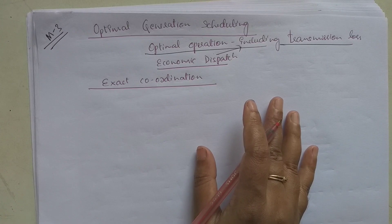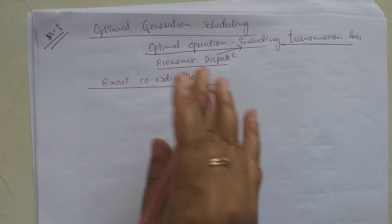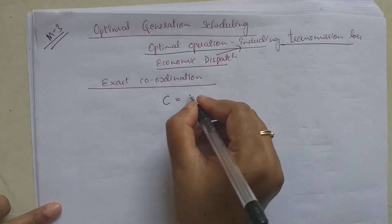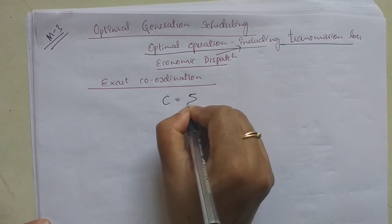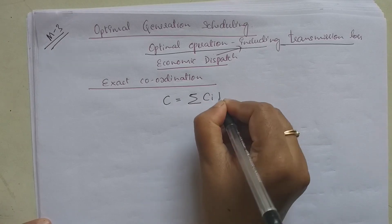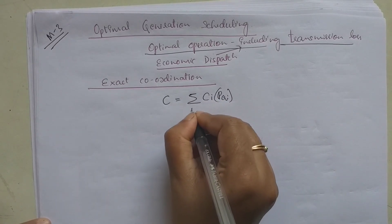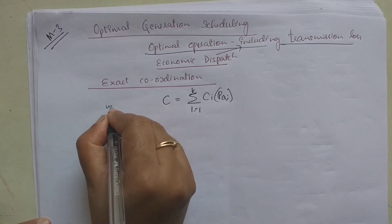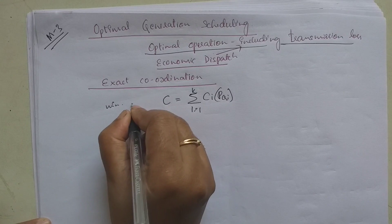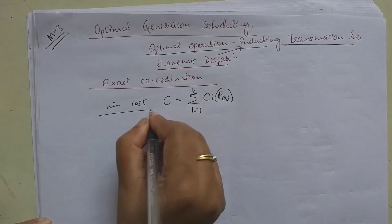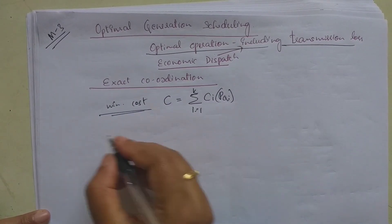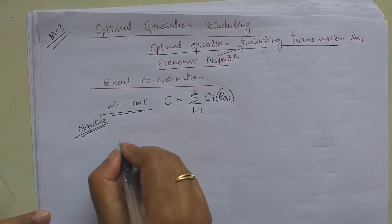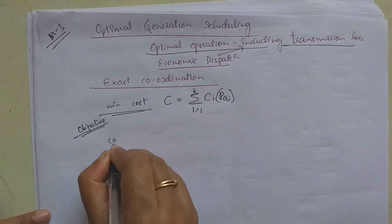The optimal way in which the load is shared by the generators at the bus is given by the formula: C = summation of C_i(P_Gi), where i varies from 1 to k. This is the minimization of the cost function, which is the objective of the problem.